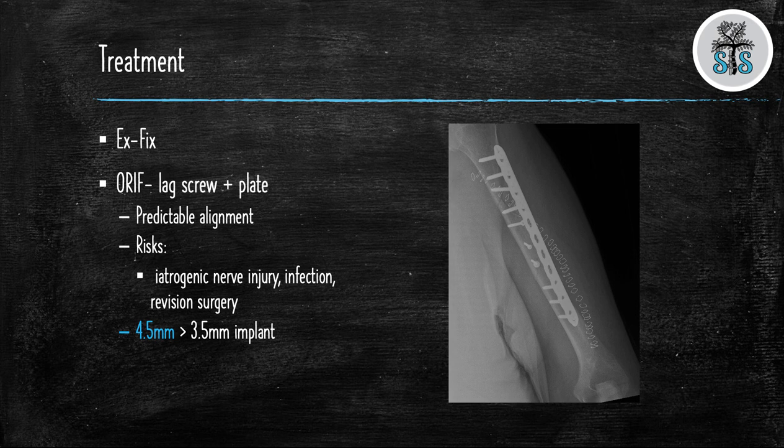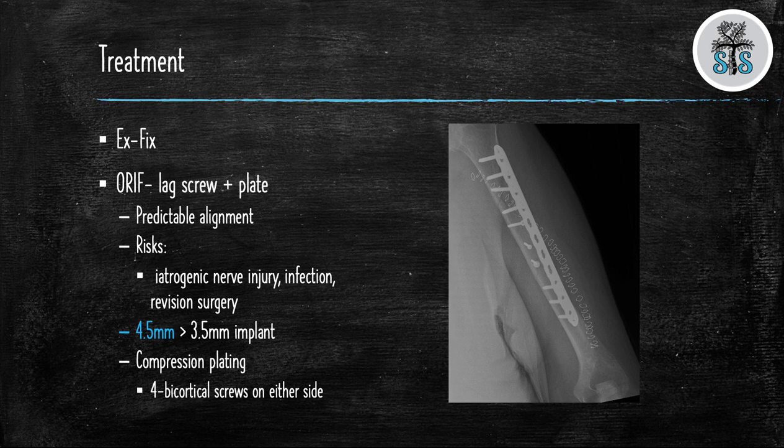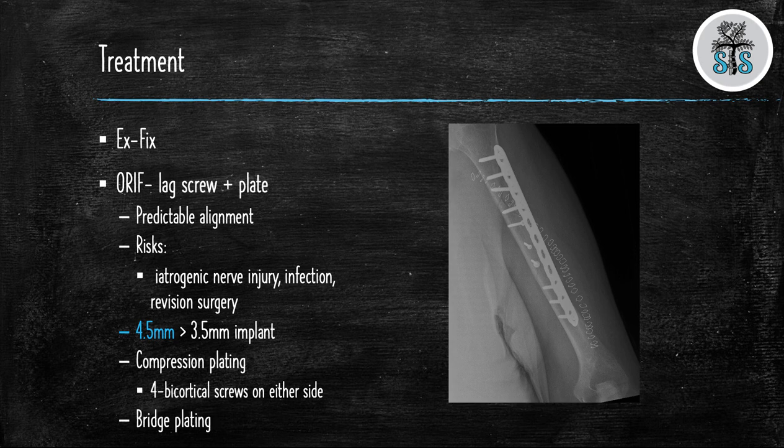A 4.5 mm plate is superior to a 3.5 mm plate. When you use a compression plate your goal is to place four bicortical screws on either side of the fracture site. Bridge plating will be used if there is a significant amount of comminution.